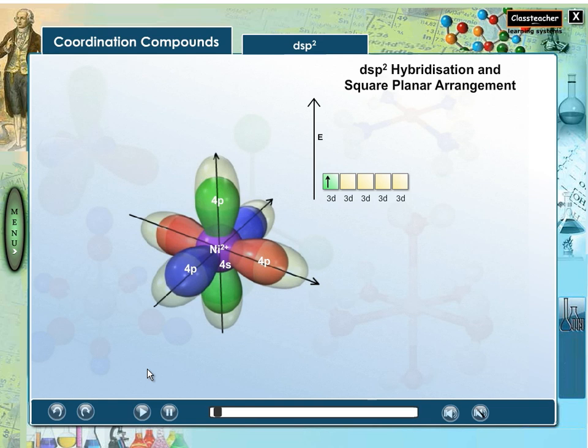In nickel-2-ion, there are 8 electrons in 3d orbital and 4s and 4p orbitals are empty.